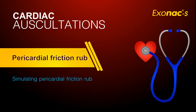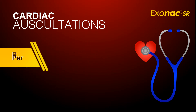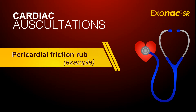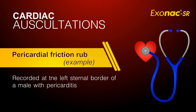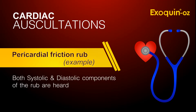To simulate a pericardial friction rub, grasp the diaphragm of the stethoscope in the palm of your hand and then rub the back of that hand with the finger of your other hand. The following example displays a typical friction rub recorded at the left sternal border of a male with pericarditis. Both the systolic and diastolic components of the rub are heard.